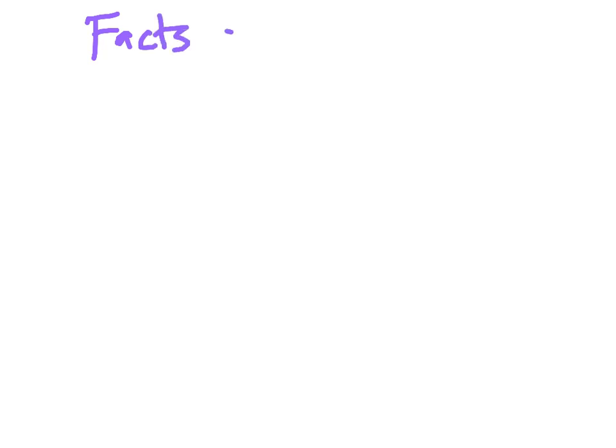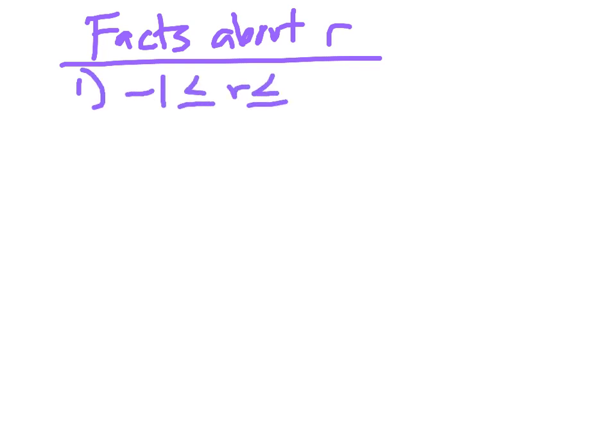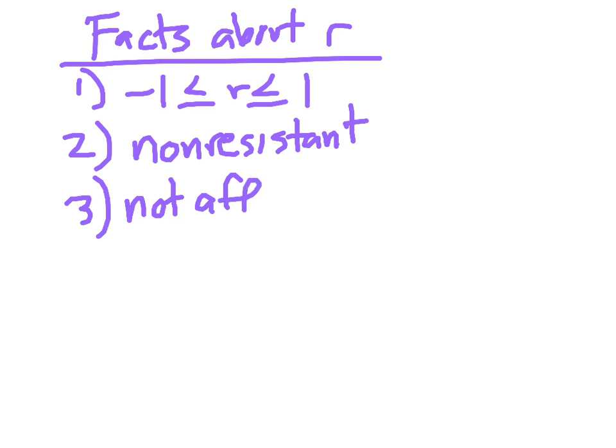What do we know about r? Facts about r, which is the correlation coefficient. We just said that r is always between negative 1 and 1. One of the facts about r is that it is very non-resistant. Any kind of one outlier will dramatically change r. Another fact about r is that it's not affected by swapping x and y. If you made a scatterplot with height on the x-axis, weight on the y-axis, and got an r value, and then you flip-flopped them, it would have the same r value because it measures the strength.